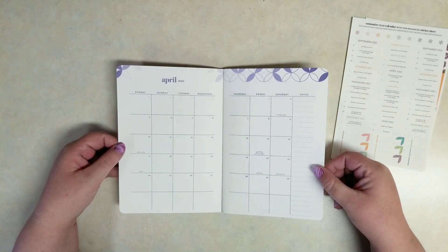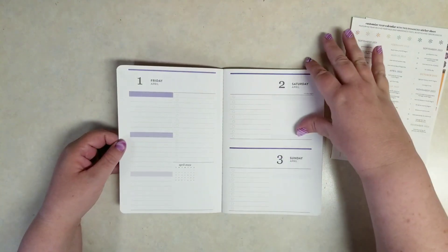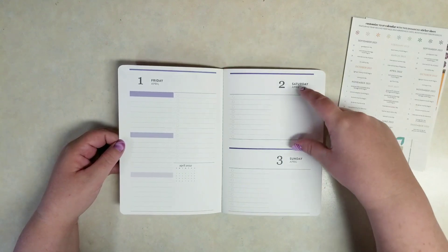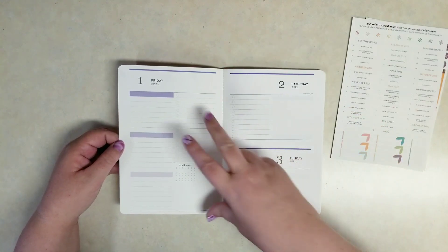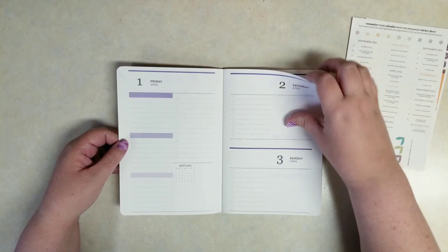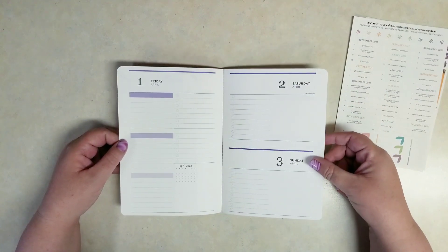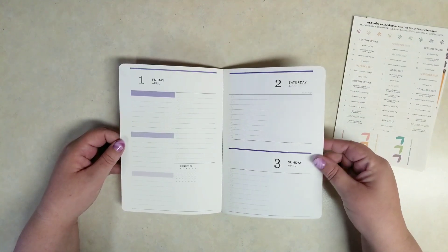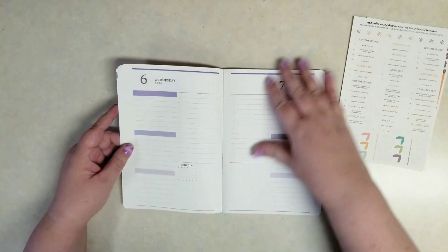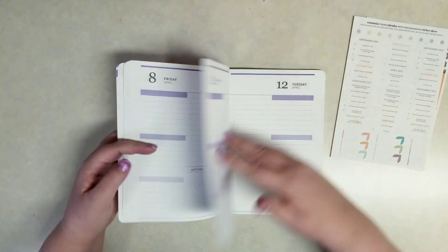So you do get the monthly view like this and then the daily pages. But you can see Saturday and Sunday do share a page, which isn't my favorite because sometimes my Saturday and Sundays I have more to write than during days of the week. So I wish that those were full days, but I understand why they're doing it.